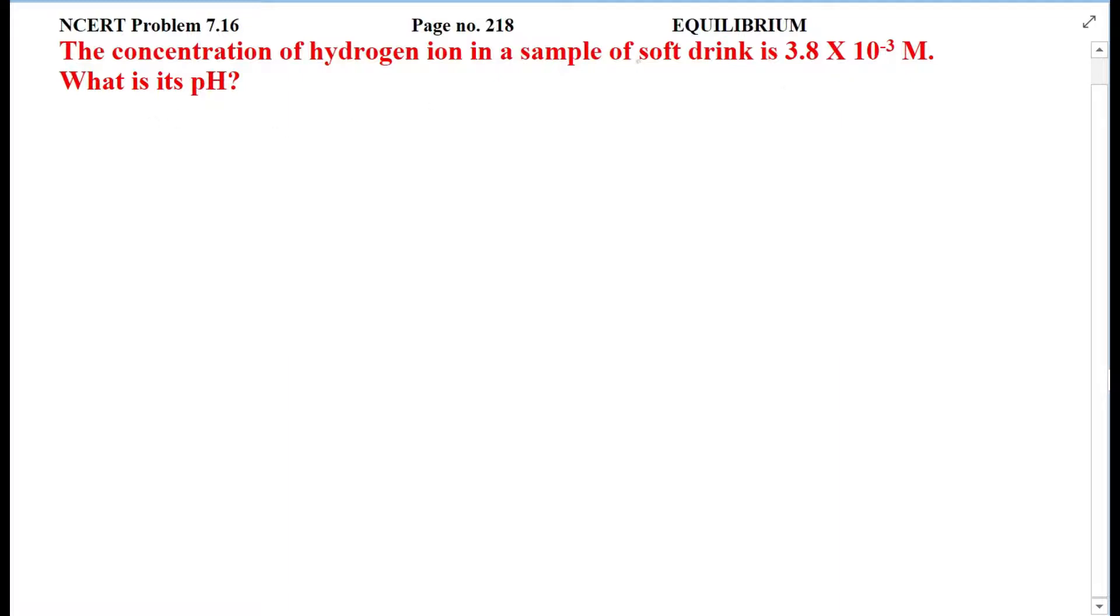You have a soft drink given in which hydrogen ion's concentration is 3.8 × 10^-3 molar, and you have to find out the pH. So the formula is pH equals minus log of concentration of H+ ions.